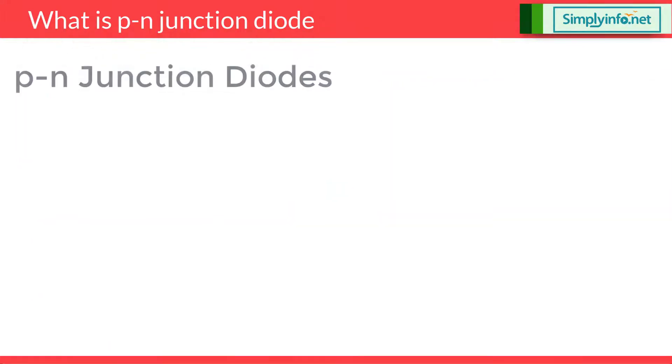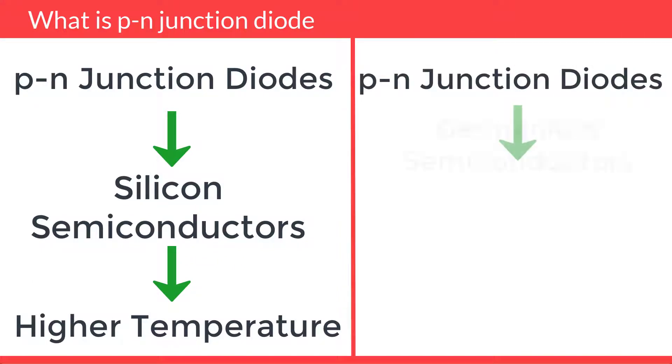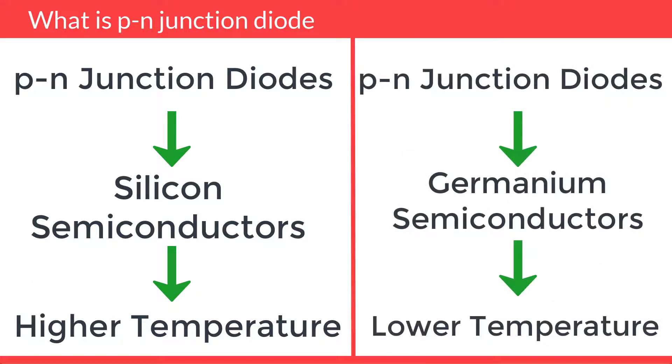PN Junction diodes made from silicon semiconductors work at higher temperatures when compared with PN Junction diodes made from germanium semiconductors.